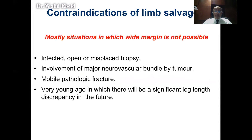We do not perform limb salvage and instead do an amputation mostly when we cannot achieve a wide margin of resection — such as when there is an infected, open, or misplaced biopsy; when the neurovascular bundle is involved by the tumor; when there is a pathological fracture with hematoma dispersed around surrounding muscles; or in very young individuals where reconstruction cannot cope with future leg length discrepancy.